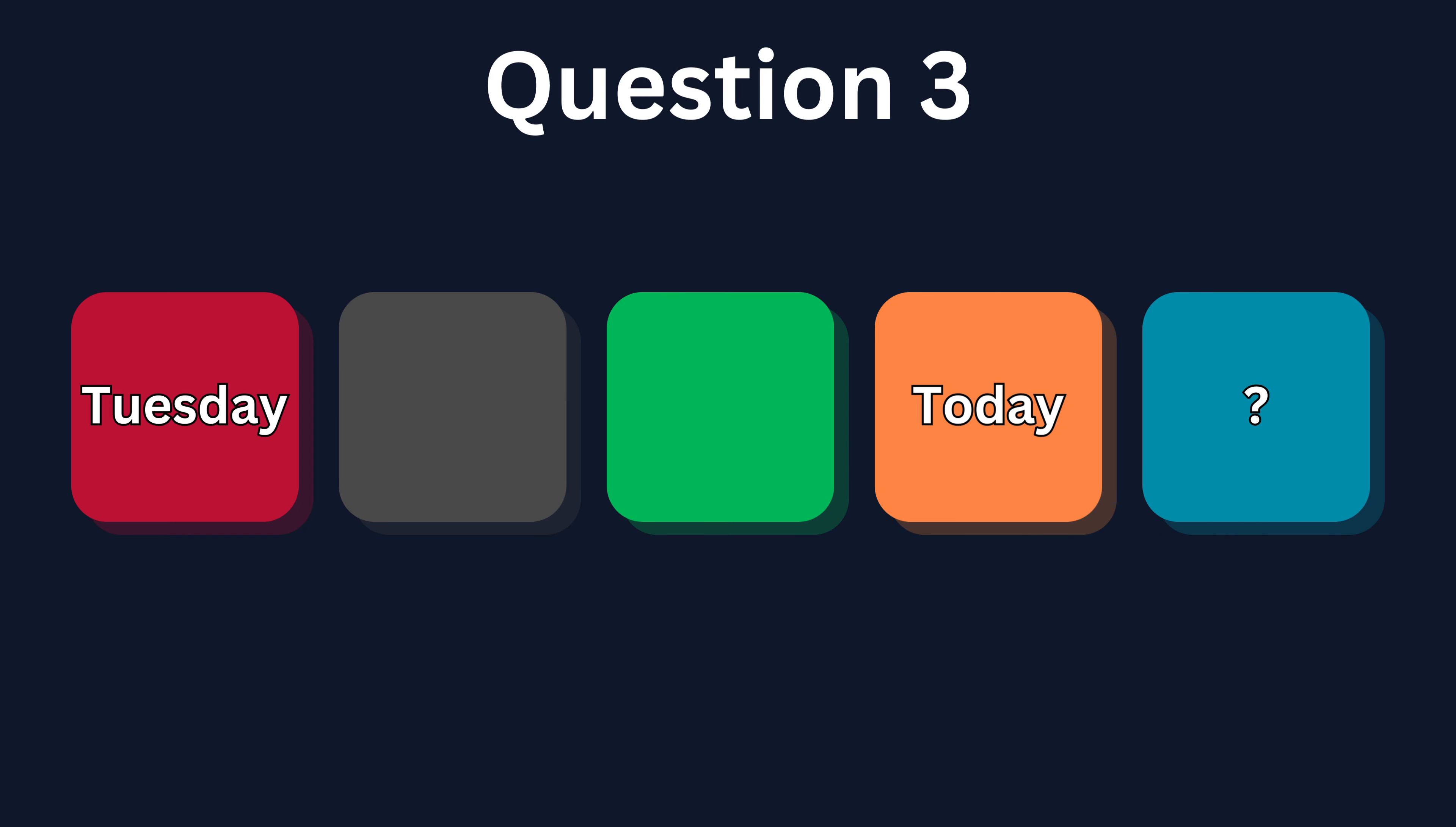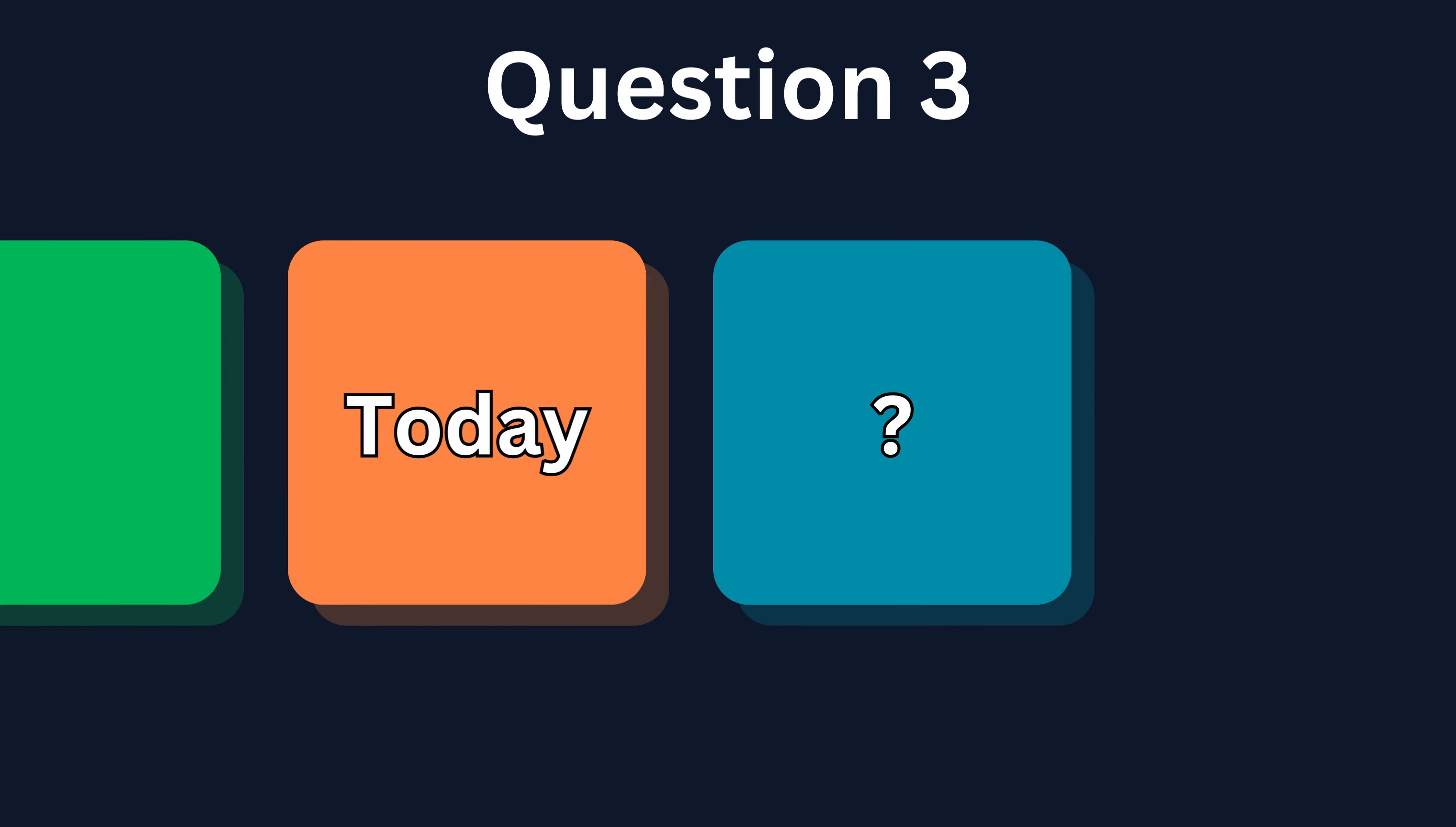Question 3. What day will it be tomorrow if Tuesday was 3 days ago? The correct answer is Saturday.